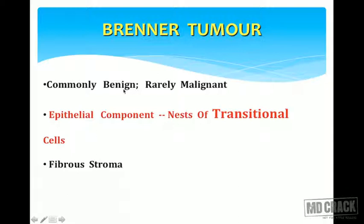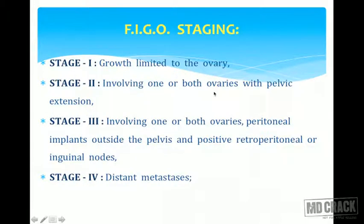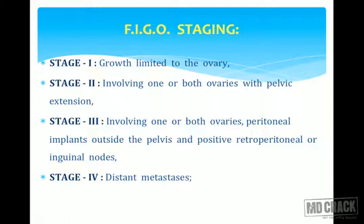Brenner tumor is mostly benign, rarely malignant. Microscopically it shows nests of transitional epithelium resembling urothelium surrounded by dense fibrous stroma. FIGO staging: Stage I — tumor limited to the ovary; Stage II — pelvic extension; Stage III — peritoneal implants outside the pelvis and positive retroperitoneal or inguinal lymph nodes; Stage IV — distant metastasis to lungs, liver, or bone. Staging determines prognosis.